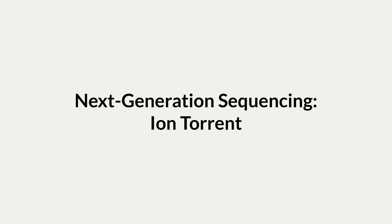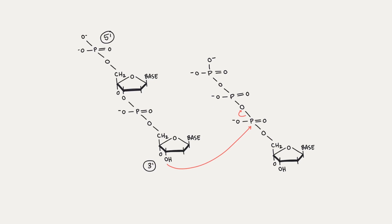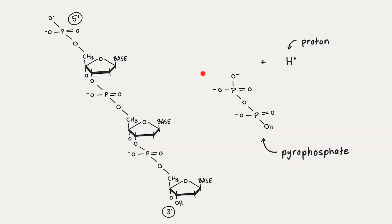In this video, we're going to cover a type of next-generation sequencing called Ion Torrent. In the process of DNA synthesis, incorporating a new nucleotide involves forming a new covalent bond here, causing the release of these two phosphate molecules, called a pyrophosphate, and a positively charged hydrogen ion. Ion Torrent sequencing exploits this by sequencing DNA through the detection of these hydrogen ions, which are released during DNA polymerization.